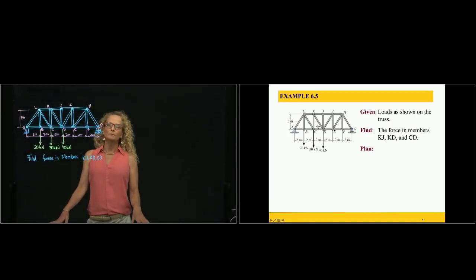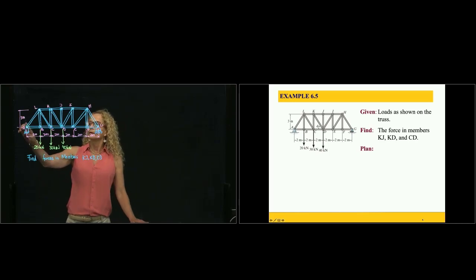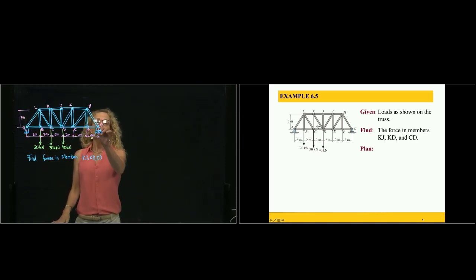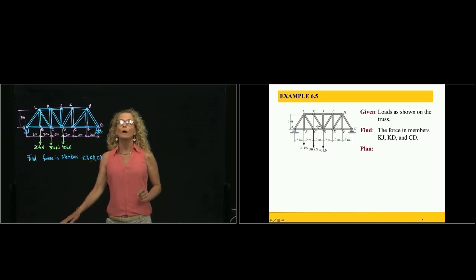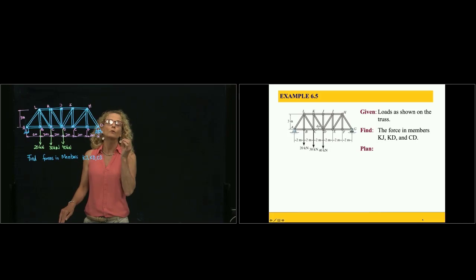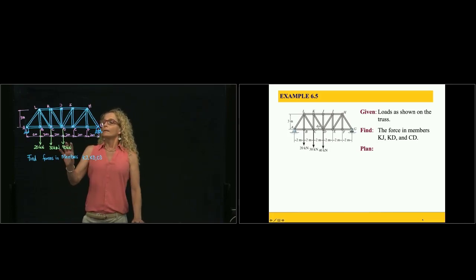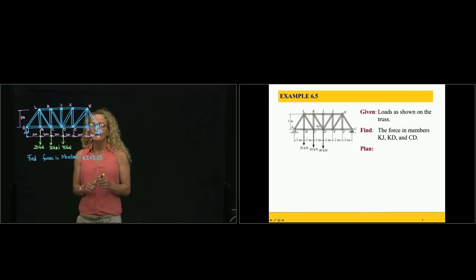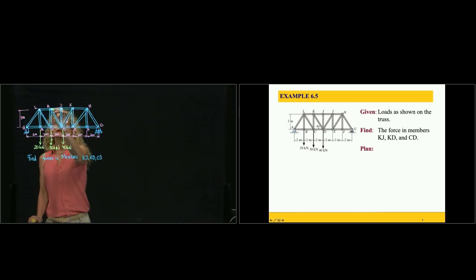This is example 6.5. Here we have a truss with several members. We have a pin at A that restricts two displacements in X and Y, therefore it has two reactions. We have a roller at G that restricts only one displacement in the vertical direction, therefore only one reaction. We have three external loads applied, and we need to find the forces in members KJ, KD, and CD.